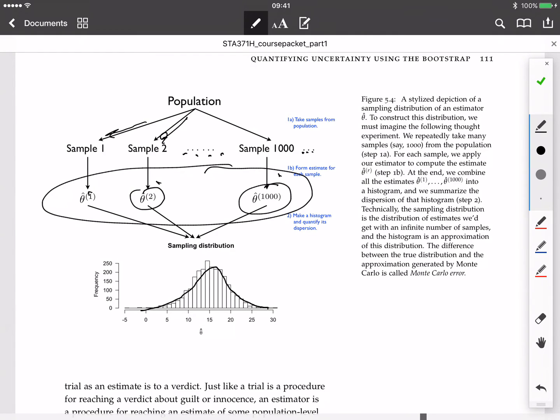That histogram is now called the sampling distribution of our estimator. And the estimator is whatever procedure we use to construct the estimate in this sample and this sample and this sample over here. So this sampling distribution is the object that we want to get our hands on. And it involves this thought experiment.